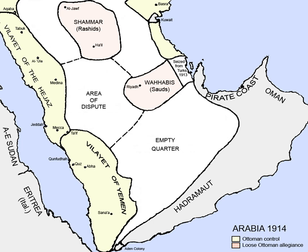South Yemen is the common English name for the People's Democratic Republic of Yemen, which existed from 1967 to 1990 as a state in the Middle East in the southern and eastern provinces of the present-day Republic of Yemen, including the island of Socotra. It was also referred to as Democratic Yemen or Yemen.